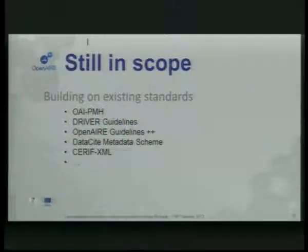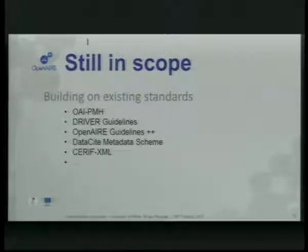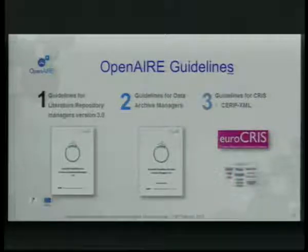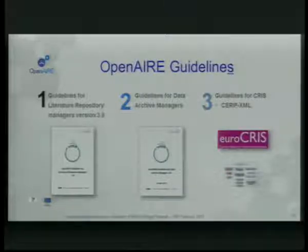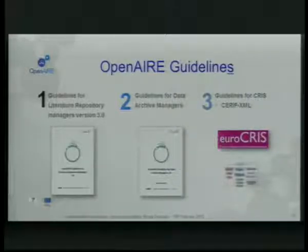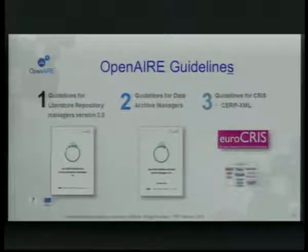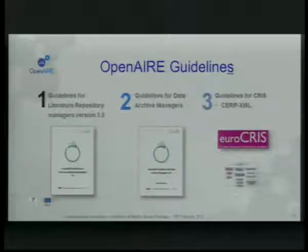For Open AIRE, it is still very much in scope that we build on existing standards — we are not trying to invent something new. That is why we are talking about guidelines, not standards. The new approach involves several guidelines. There is a guideline for literature repositories coming in version 3, which will also include links and citations to data. There are guidelines for data archive managers, which I will talk more about. And there are guidelines for CRISes.